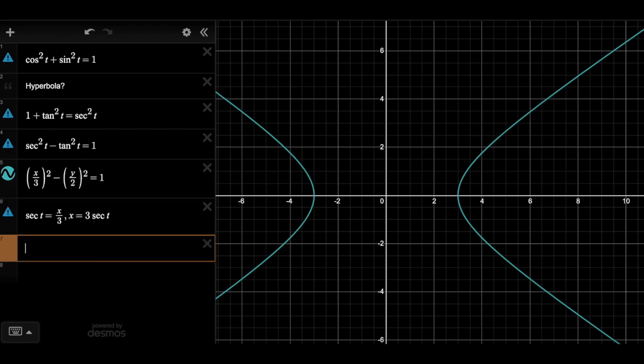In this case, tangent will always be the negative quantity in the hyperbola, y over two, which means that y equals two tangent t.